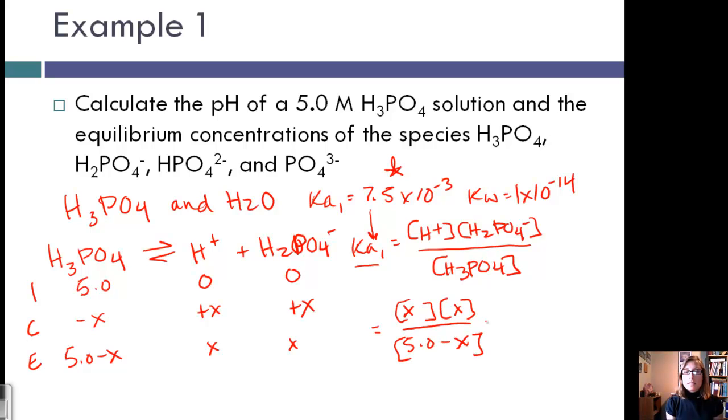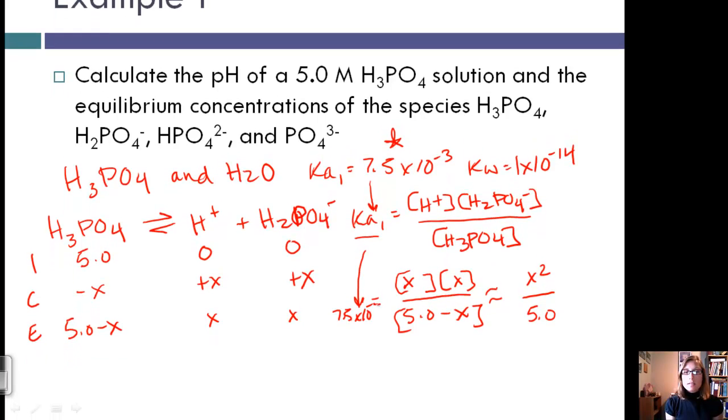We're going to make the assumption that 5 minus X is approximately equal to just 5, saying that the X is relatively small. And so if we solve for that, our Ka is 7.5 times 10 to the negative 3, we get an X value of 1.9 times 10 to the negative 1. This is less than 5% of 5, so our assumption checks.